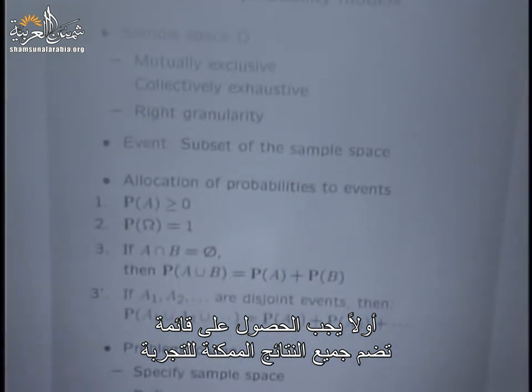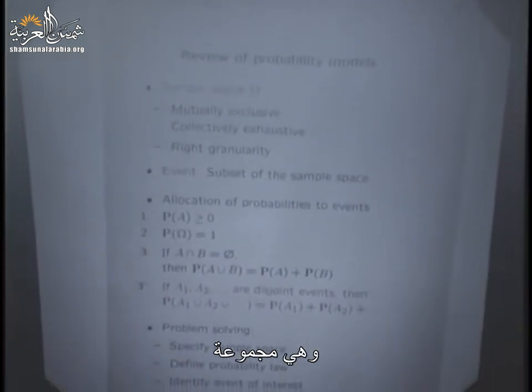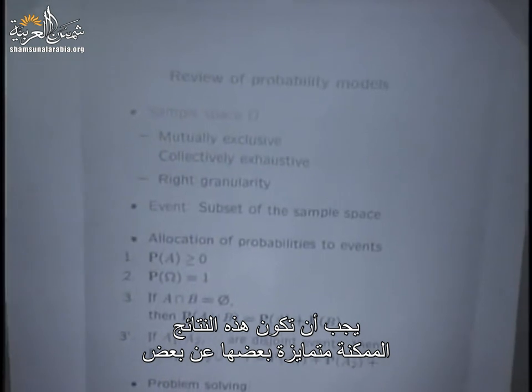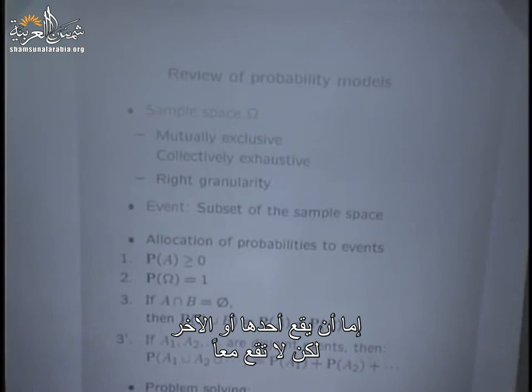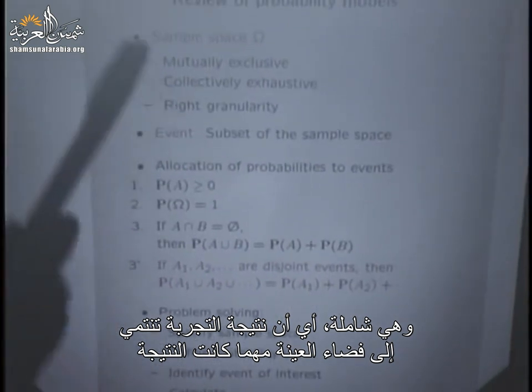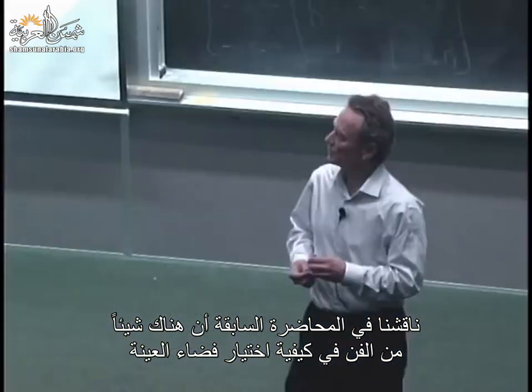For our quick review: in setting up a model of a random experiment, the first thing to do is to come up with a list of all the possible outcomes of the experiment. That list is what we call the sample space. The elements of the sample space are all the possible outcomes. Those possible outcomes must be distinguishable from each other — they're mutually exclusive — and they're collectively exhaustive. The outcome of the experiment is always going to be an element of the sample space. There's also an element of art in how to choose your sample space, depending on how much detail you want to capture.